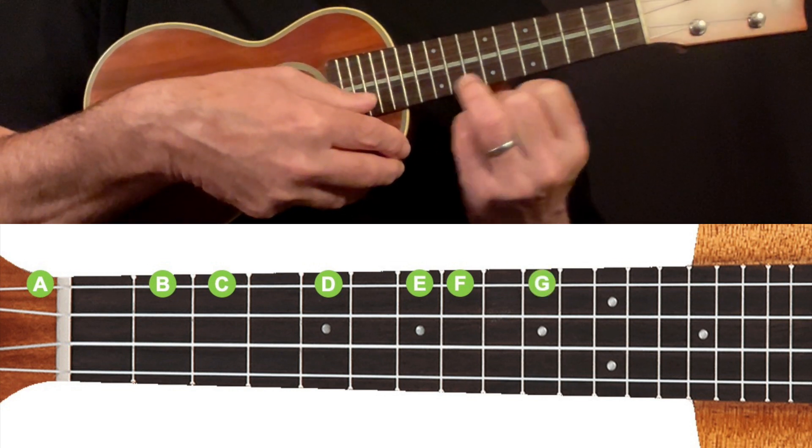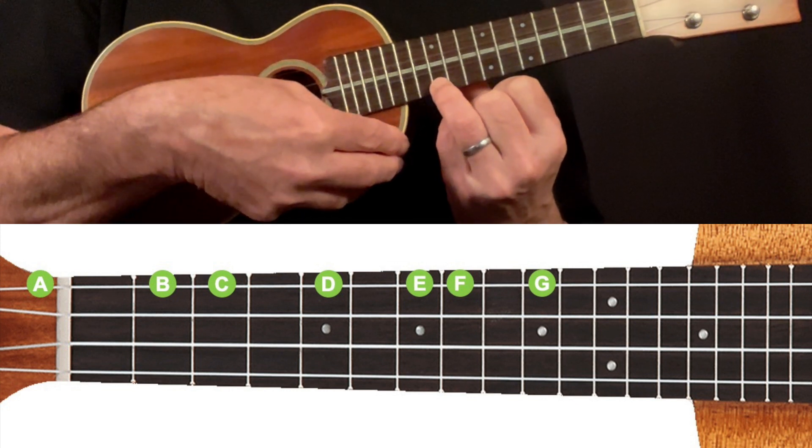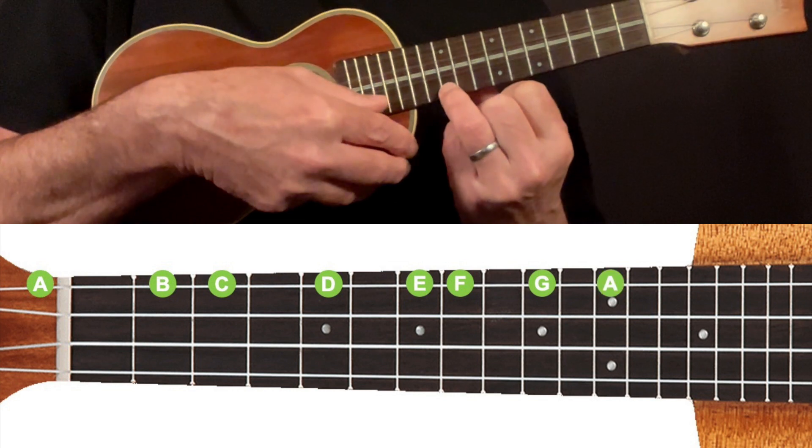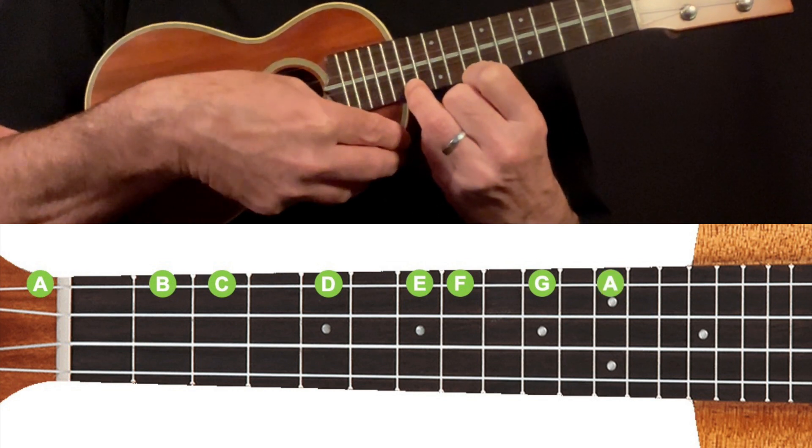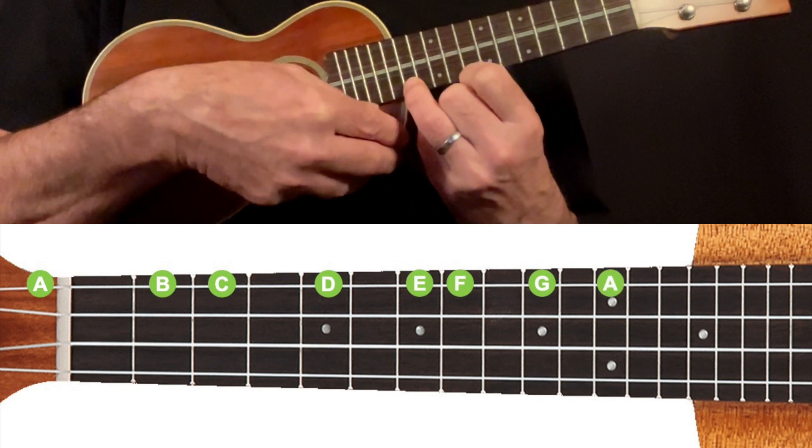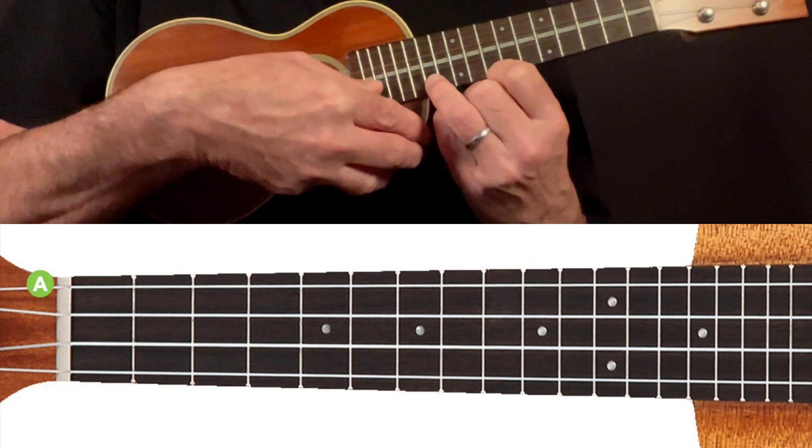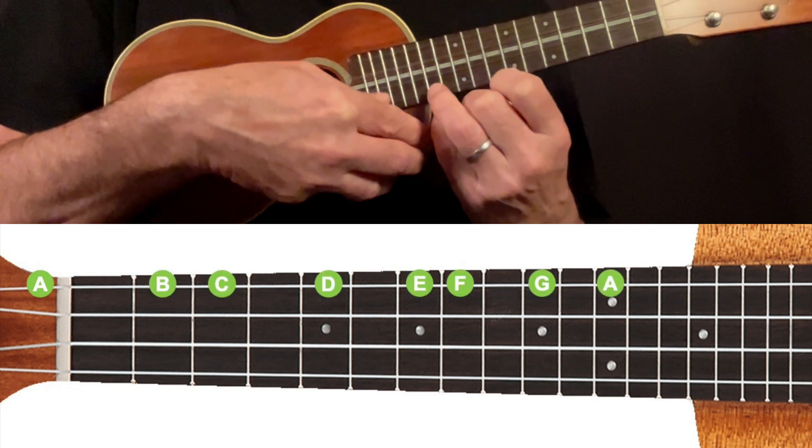Move up two more frets to the tenth fret, and we have a G. And then finally, if we move up two more frets to the twelfth fret, we have another A, an octave higher than the A we started with, the open string. So open, octave.